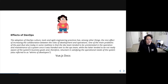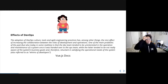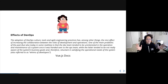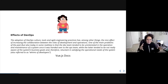One of the main problems of the past — but also today in some realities — is that the dev team tended to be uninterested in the operation and maintenance of the system once it was handed over to the ops team, while the ops team tended to be not really aware of the system's business goals and therefore reluctant in satisfying the operational needs of the system, also referred to as 'whims of developers.' There's always been a bit of a fight between developers and operations, developers and security, developers and QA — and that's something we want to stop.